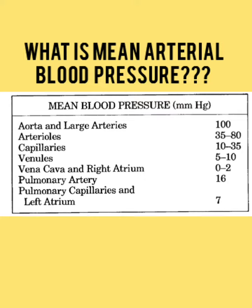What do you mean by mean arterial blood pressure? That is nothing but MAP. MAP is the average arterial pressure throughout one cardiac cycle — systole and diastole. See in the table: the mean blood pressure is given in mmHg for each of the arteries, capillaries, venules, and so on.